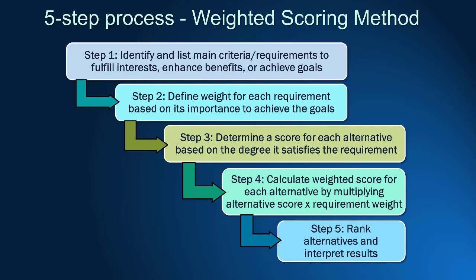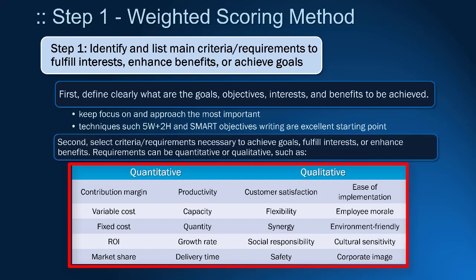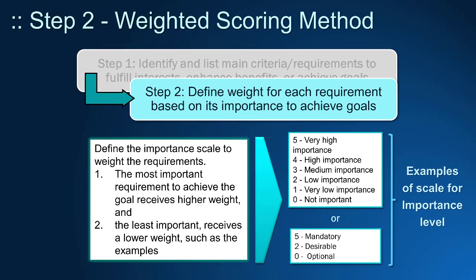Let's see the details of each step. In the first step, it is crucial to clearly define the goal, then choose requirements or criteria that are important to achieve the objective. The requirements or criteria can be qualitative or quantitative. You can see some examples for business scenarios.